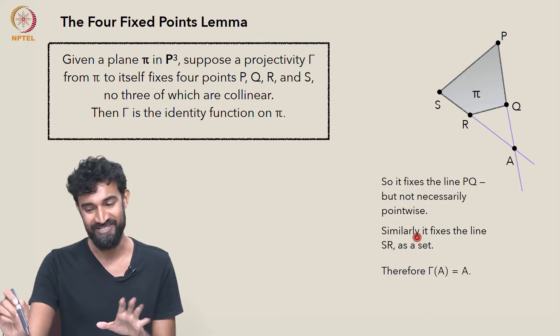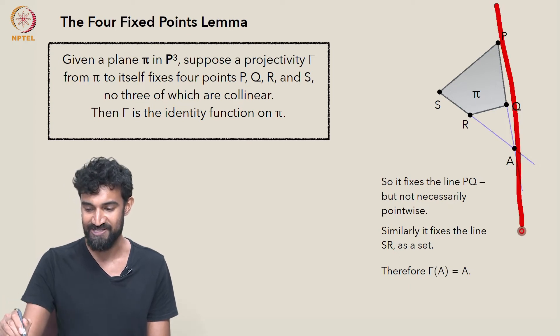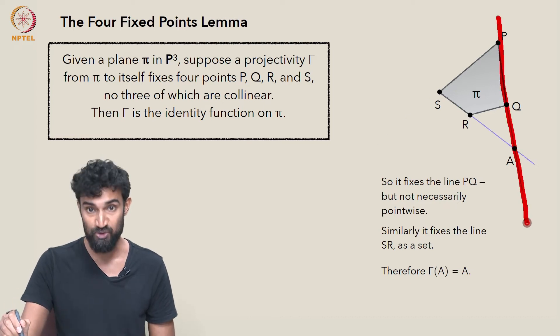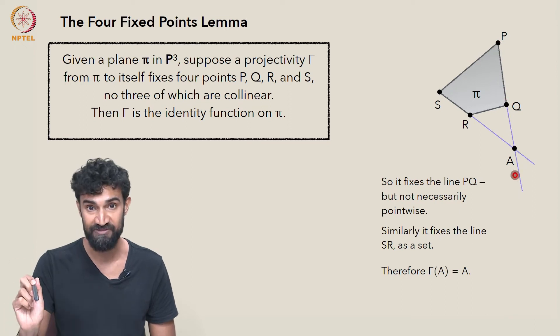γ also fixes A. Now we're in business because γ fixes P, Q, and A—three points all lying on this line. So it's going to fix this line point-wise; it's going to fix each and every point on this line by the three fixed points theorem.